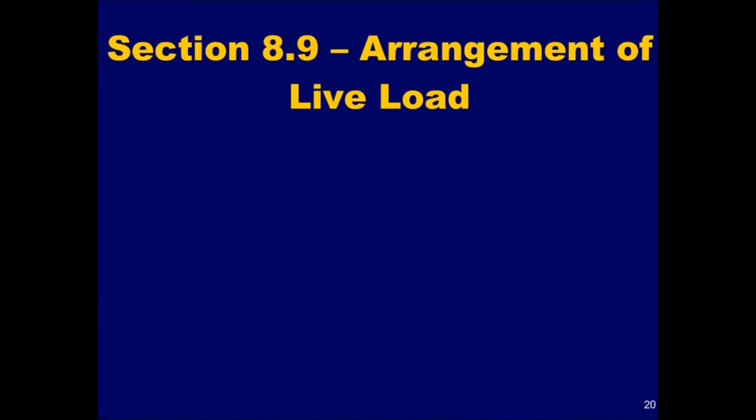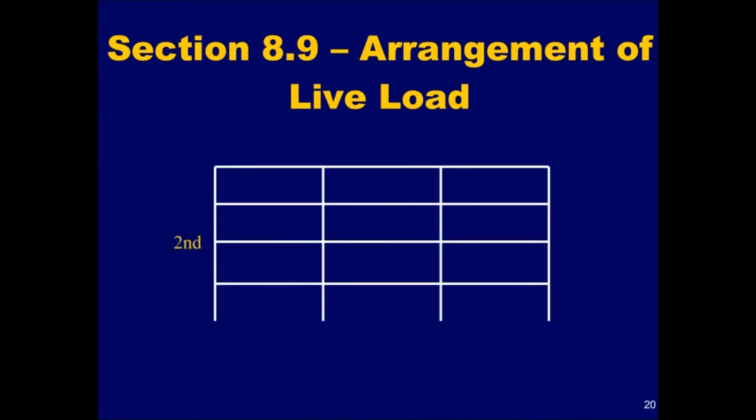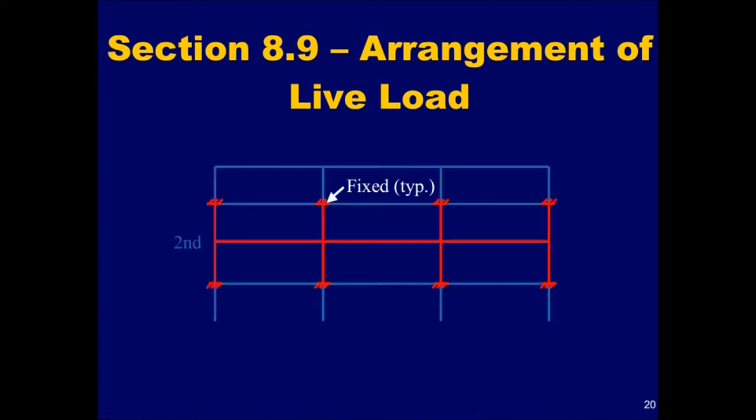The second assumption is that the far ends of the columns are assumed to be fixed for the purpose of analysis under gravity loads. Once again, if we are interested in designing the beams at the second floor level, the columns above and below that floor level are assumed to be fixed as illustrated.